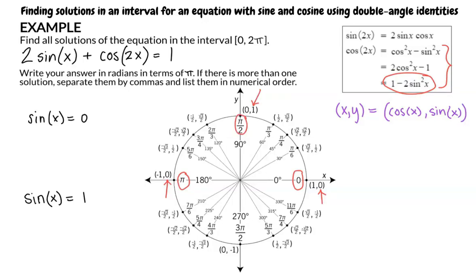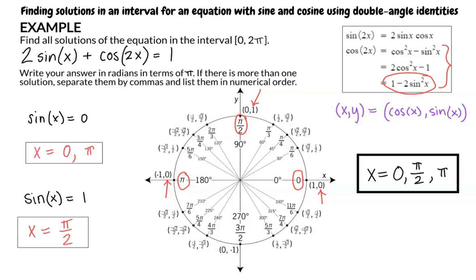Shouldn't we also look at the coterminal angles? Good question. We do not need to write any coterminal angles because we are asked to find the x values on the interval from 0 to 2 pi, which is the interval of 1 unit circle rotation. So, our final answer is x equals 0, pi over 2, or pi.